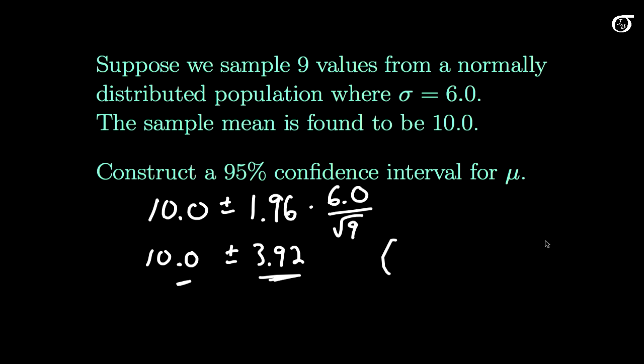We could do the addition and subtraction and write it in interval notation, and this is 6.08 to 13.92. And once again, the interpretation is quite important, but we'll look at that in more detail in another video. But we can be 95% confident that the population mean μ lies between these two numbers. Now we have to be a little careful about how that's phrased, so we'll look at that in more detail later.